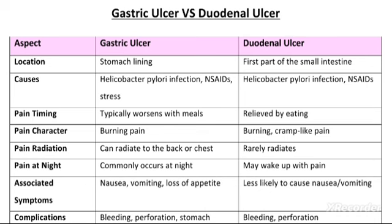Third difference hai pain timing — ki kis time pe jyada pain hoti hai. Gastric ulcer ki jo pain hai, woh typically worsens with meals. Jab person khana khata hai, toh khana khane ke baad jo pain hai woh severe hoti hai — ye hota hai gastric ulcer mein. Aur jo duodenal ulcer ki pain hai, woh khana khane ke pehle hoti hai, aur jab person khana khata hai toh woh pain relieve hoti hai.